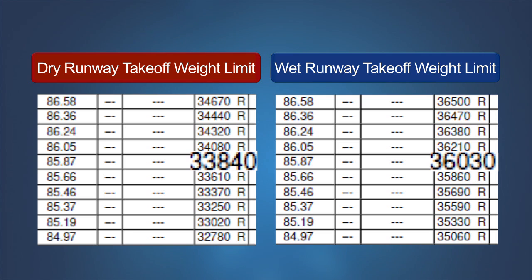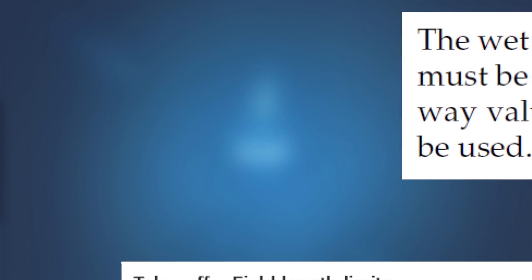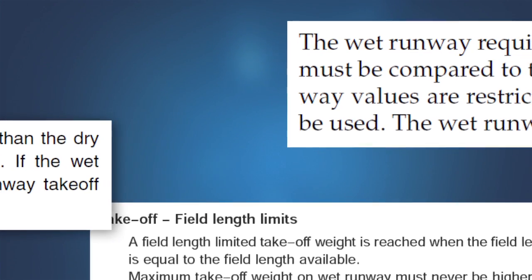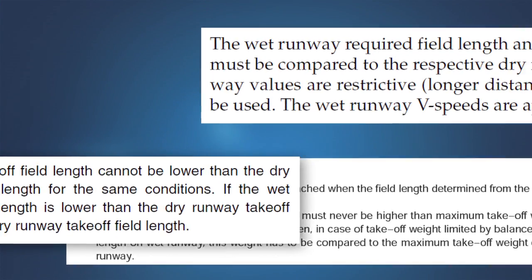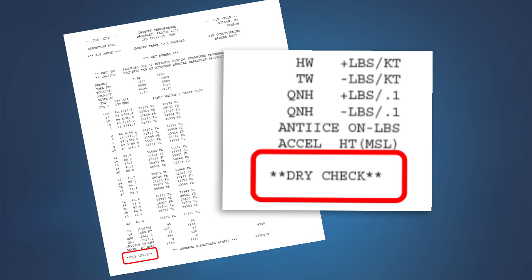This can lead to a situation where the wet runway analysis produces greater takeoff weights than the dry analysis, but the certification rules have an additional requirement to address this situation. These rules specify that the accelerate stop distance and the one engine inoperative takeoff distance must be the greater of either the dry runway or wet runway distances. This requirement is reflected in the instructions in most FAA-approved airplane flight manuals where wet runway takeoff performance data is furnished. Users are advised to check the distances required or takeoff weight limits determined on a wet runway against those for a dry runway condition and to use the most restrictive distance or weight limit. In some instances, the airport analysis furnished will incorporate this dry check; however, users should verify this feature with their performance engineering services provider for their aircraft.